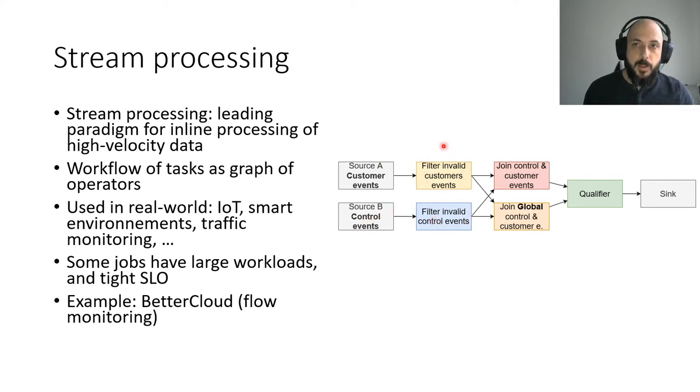Several tasks are then launched sequentially: filtering invalid events, join control and customer events, and then qualification of the events that compute if the needed action should be done for the customer event. The obtained result, that will be alert or action, is then exported to the rest of the system using the sink task. We will present experiments on this graph with a representative workload in the experiment part.